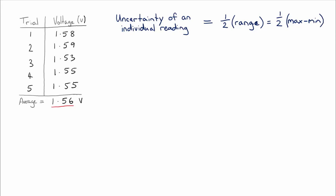Now it's really important to point out that the value of this uncertainty is not necessarily the same as your instrumental uncertainty. That's the uncertainty you anticipated based on the size of the divisions on your measuring instrument.